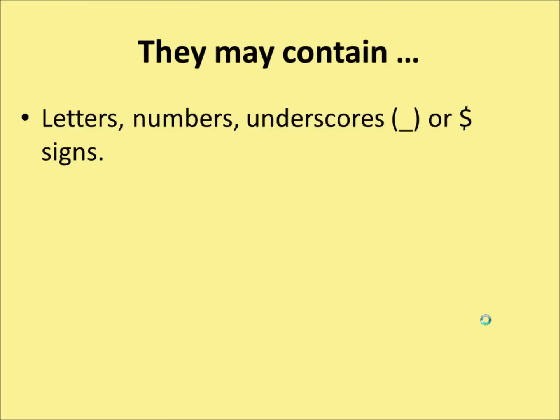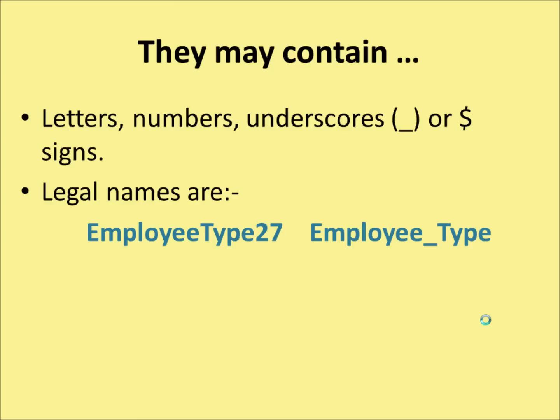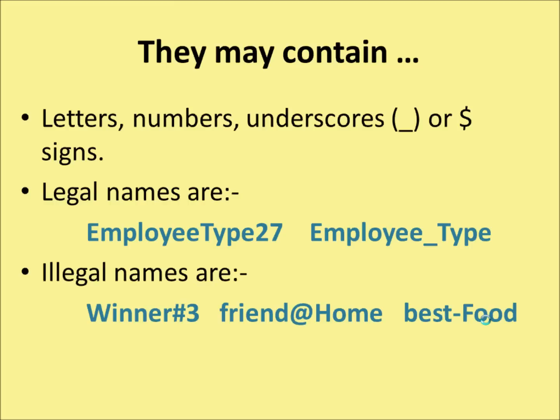Names can contain letters, numbers, underscores, or dollar signs. A legal name would be 'employeeType27' — you can't start with a number, but you can have numbers within the name. 'employee_type' with an underscore would also be legal. Illegal names would be 'WinnerHatch#3', because the hash is not a legal character, or 'friend@home', because the at symbol is not legal, or 'best-food', because hyphens — or minus signs — are not legal characters.